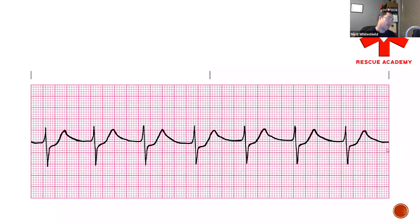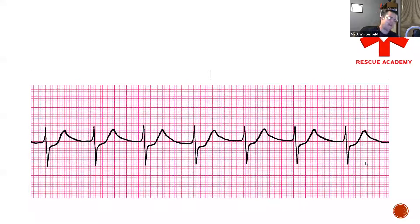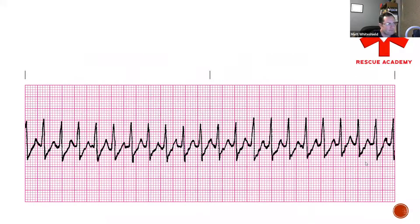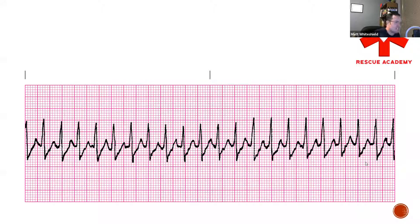We have one here: rate of 70, no P-waves — accelerated junctional, pretty straightforward. Next strip: can we tell if it's P-waves or T-waves? No, we can't. So we know this is SVT.